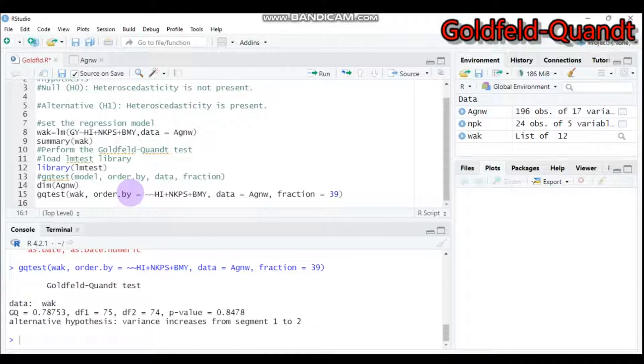As you can see here, the Goldfeld-Quandt test shows the p-value is around 0.8478, which means it is greater than 0.05. So we have no sufficient evidence to reject the null hypothesis. That means there is no heteroscedasticity present in our data. By this way, we can perform the Goldfeld-Quandt test.